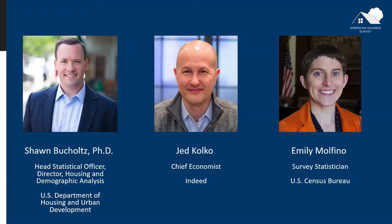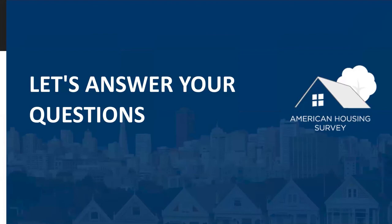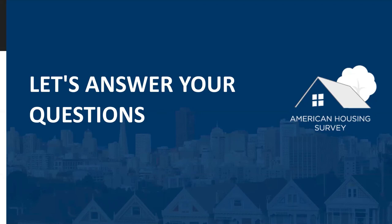Now we're going to move to the last part of our webinar — taking questions from the audience. The first question: is there a variable for urban, suburban, or rural in the 2017 public use file? Unfortunately, the answer is no. We have limitations on the information we can put in the public use file due to disclosure avoidance. The variable itself is only available in the internal use file. If you're interested in doing more work with this data, you can apply to use the internal use data through a Census Bureau research data center.